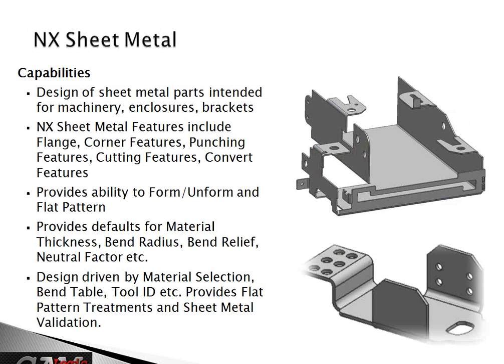Let's get into NX sheet metal. Essentially, the design of sheet metal parts intended for machinery, enclosures, brackets, and other parts made with a brake press is pretty much what we go into with sheet metal. A flat and uniform thickness part is key here — that's something you can't forget. If you don't have a part with the correct thickness, you could run into some issues or can't even get started. You've got flange, corner features, punch features, cutting, convert, and all different types of bends — you can form unformed plunges, and also create flat patterns for production to minimize waste and maximize efficiency.